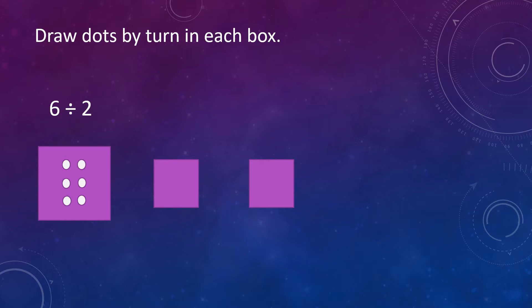Our first sum is 6 divided by 2. Here 6 dots are given and we have to divide them equally between two boxes. So let's begin — put a dot in each box. Take a dot and put it in the first box, then take a second dot and put it in the second box.